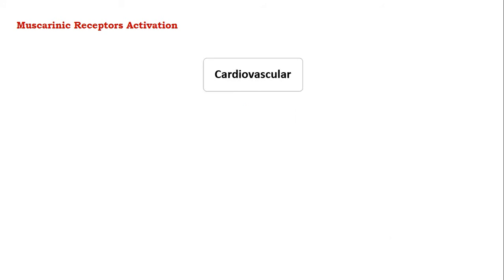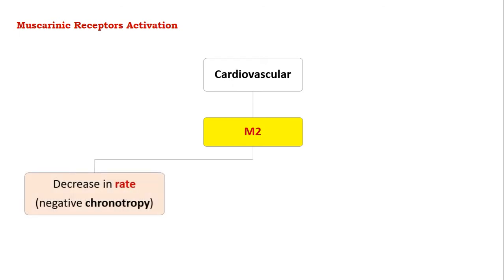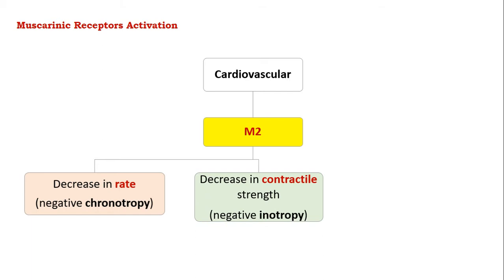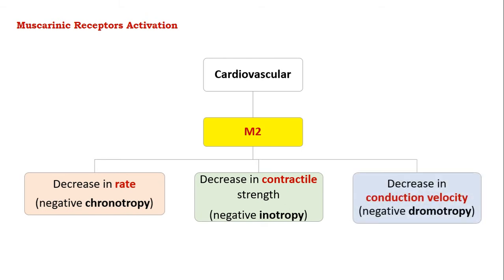The second system is the effect on the cardiovascular system. The muscarinic receptors activated will be M2 receptors, which will lead to decrease in the heart rate — that is negative chronotropy. It also decreases the contractility of the heart, causing negative inotropy, and in addition decreases the conduction velocity — that is negative dromotropy.